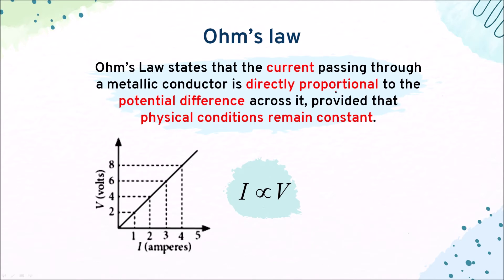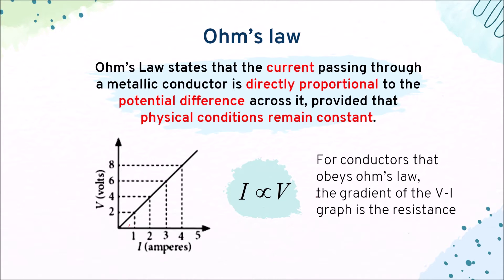If a conductor obeys Ohm's law, then the current and the potential difference are directly proportional to each other. If it is an ohmic conductor, the graph would be a straight line, and if it is a straight line, we can find the gradient. The gradient of a VI graph in this case will represent the resistance, and this only works if it is an ohmic conductor and it is a perfectly straight line.